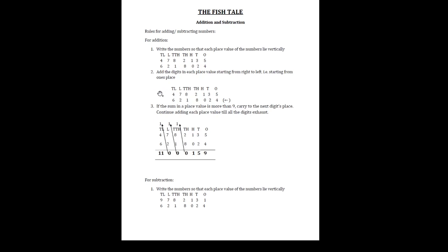Once we do this, we go on for addition. Addition starts from right to left — we start adding the digits in each place value starting from ones place, then move on to tens place, then hundreds place, then thousands place. Likewise we keep on moving further till we exhaust all the digits.